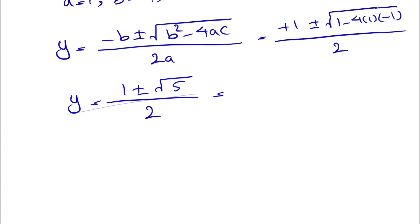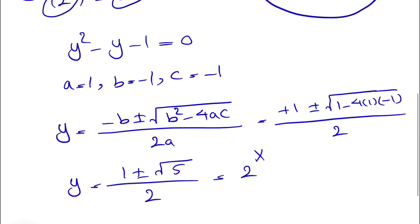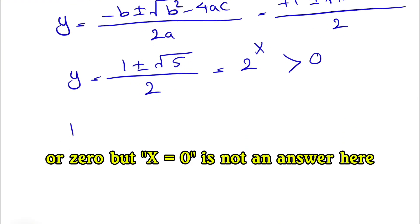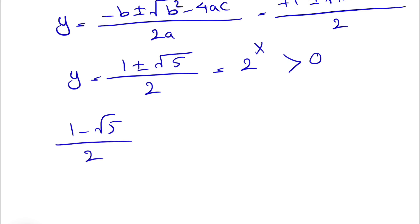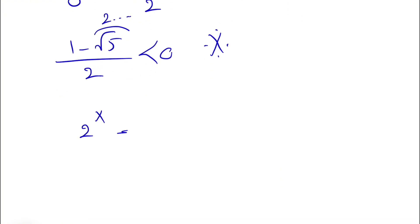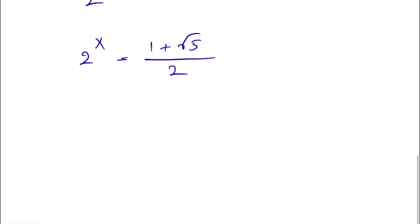This equals 2^x, since we set y equal to 2^x. Since x belongs to real numbers, 2^x must be positive. Looking at (1 minus the square root of 5) divided by 2: since the square root of 5 is approximately 2.something, this value is negative — so it's not acceptable. Our solution is 2^x equals (1 plus the square root of 5) divided by 2.